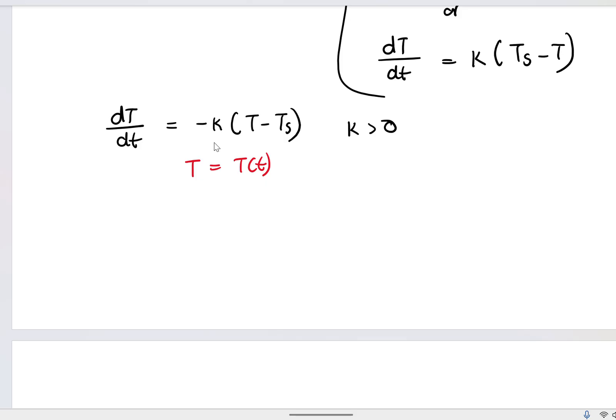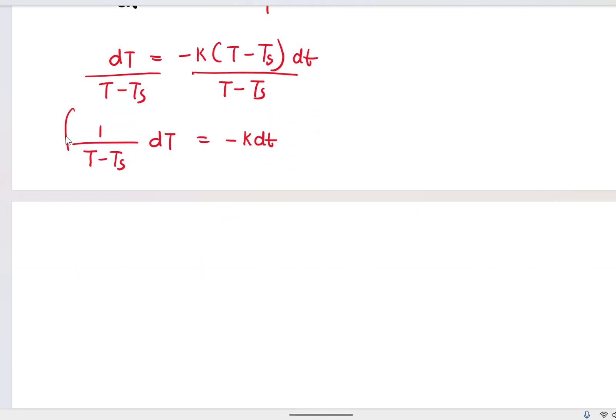So now we are going to apply a variable separation. We know that this is a constant number. What I usually do before I separate the variables, I cross multiply. So dT equal to negative k multiplied by (T - T_S) dt. Divide both sides by T - T_S. I'm going to have 1/(T - T_S) dT equal to negative k dt. Now, let's integrate both sides.